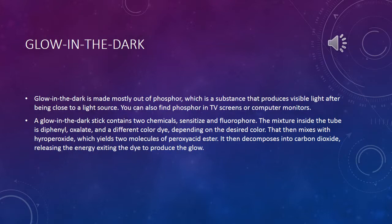Glow in the dark. Glow in the dark is made mostly out of phosphor, which is a substance that produces visible light after being close to a light source. You can also find phosphor in things like TV screens or computer monitors. A glow in the dark stick contains two chemicals: sensitizer and fluorophore. The mixture inside the tube is diphenyl oxalate and a different color dye depending on the desired color. That then mixes with hydrogen peroxide, which yields two molecules of phenoxy acid ester. It then decomposes into carbon dioxide, releasing energy exciting the dye to produce the glow.